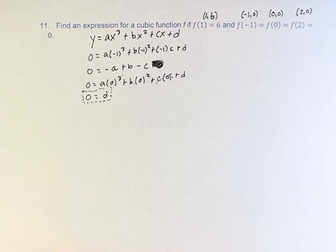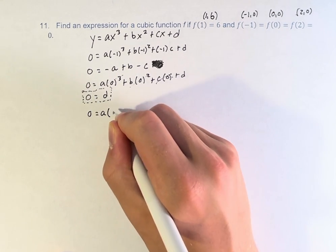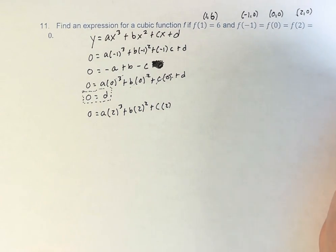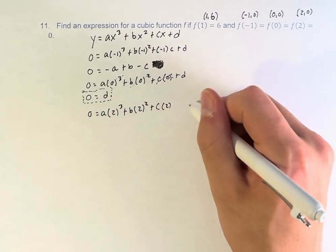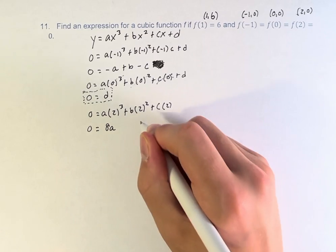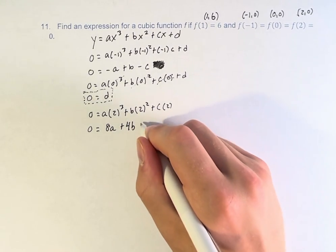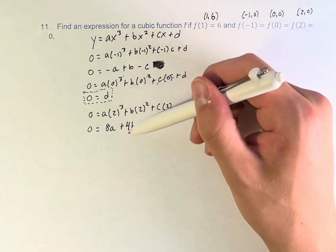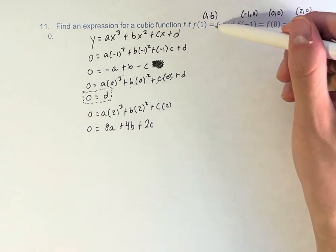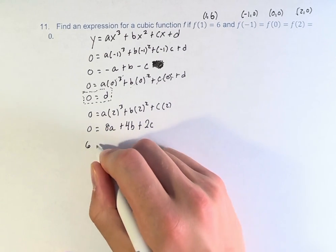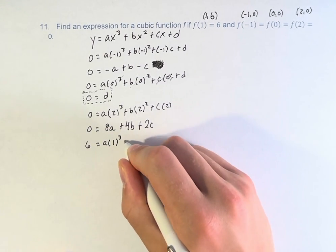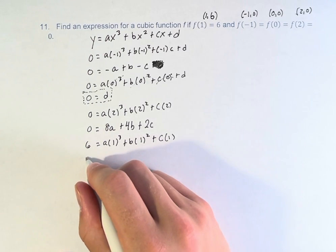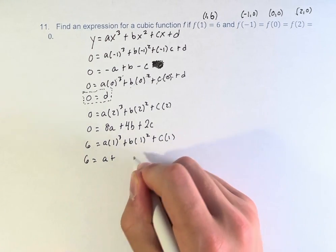Next, f of 2 is equal to 0. 0 is equal to a times 2 cubed plus b times 2 squared plus c times 2 plus d, don't even have to write it anymore since we know it's 0. 0 is therefore equal to 2 cubed is 8a, 2 squared is plus 4b plus 2c. Now, we have three variables here that we still have to solve for, and we have two equations, we still need one more. Luckily, f of 1 is equal to 6. So we can do 6 is equal to a times 1 cubed plus b times 1 squared plus c times 1. 6 is equal to a plus b plus c.